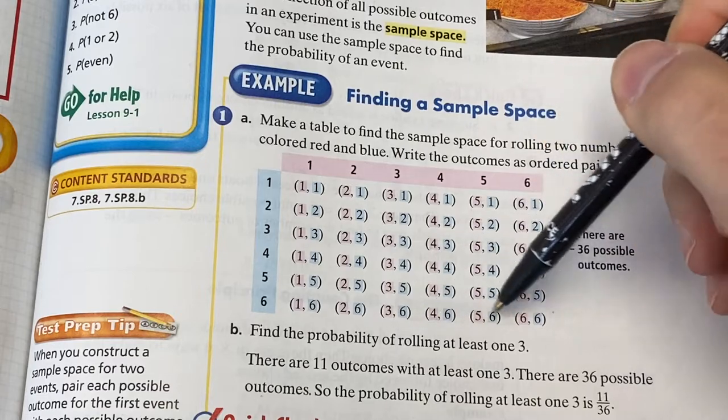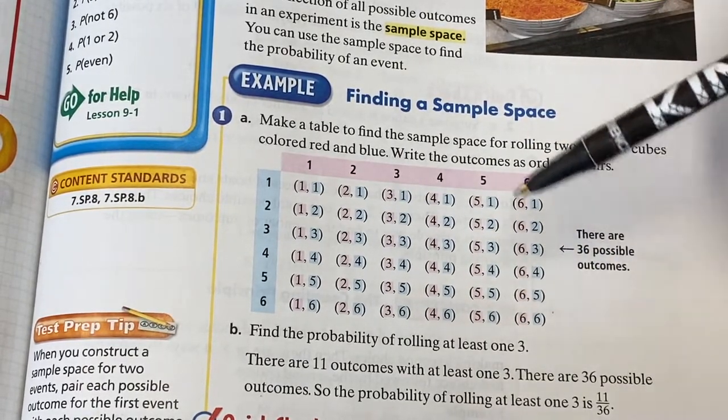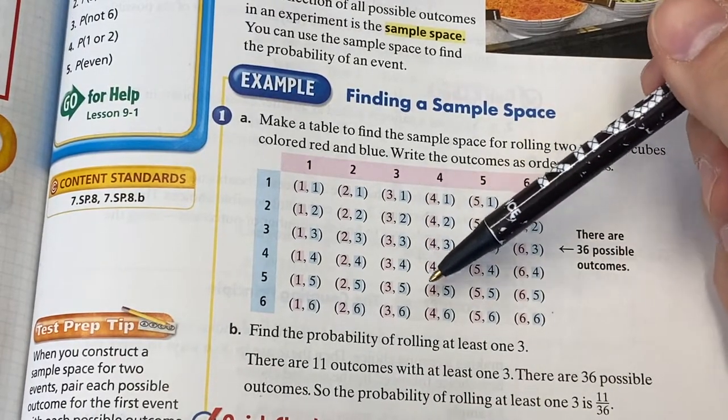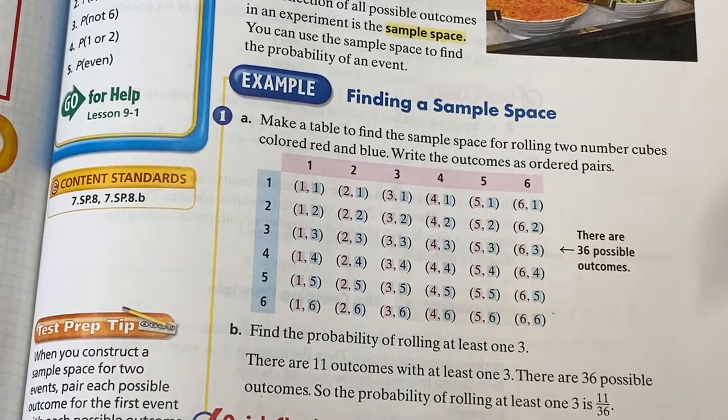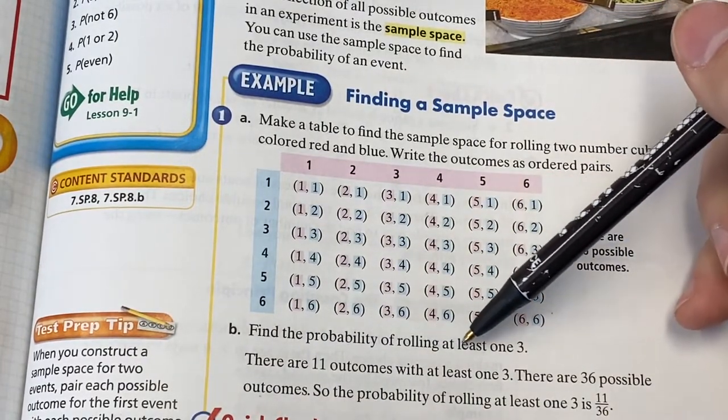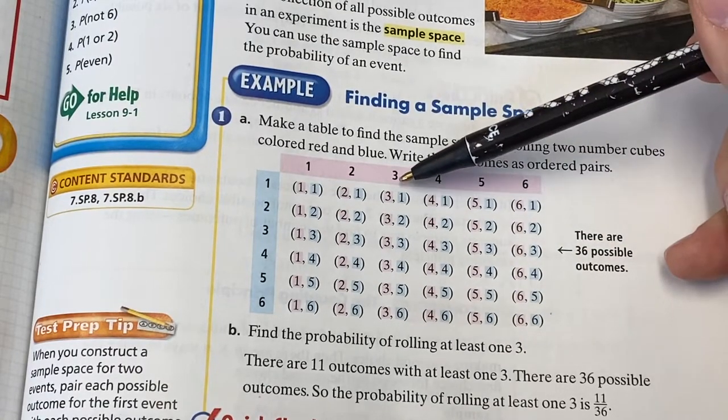If you counted up all these outcomes in here, all these ordered pairs, you would see that there are 36 of them. So you can use a sample space to calculate a probability because it shows you all the outcomes, which is your denominator. It says find the probability here of rolling at least one three. So how many of these have at least one three? Well,